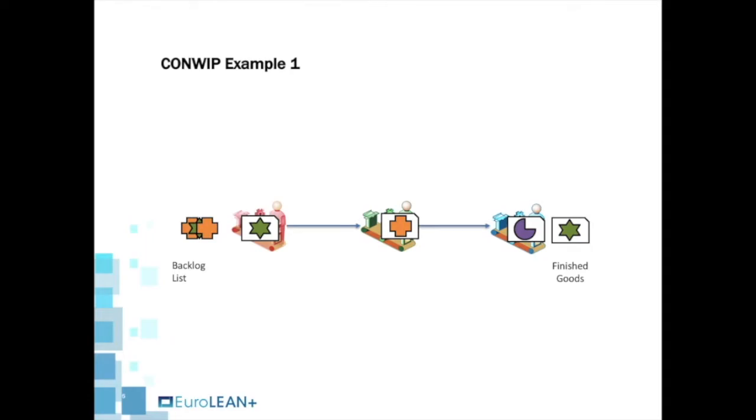As we can see, there are a total of four CONWIP cards in this production system. Three are being worked on, and one was completed recently.